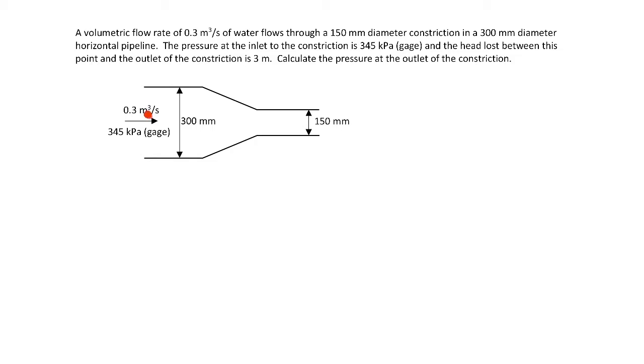We're told that the pressure at the inlet is 345 kilopascals gauge and that the head loss between this point and the outlet of the constriction is 3 meters. So basically from here to here there's a head loss of 3 meters. That would be a minor head loss because it's a constriction here. Calculate the pressure at the outlet of the constriction.